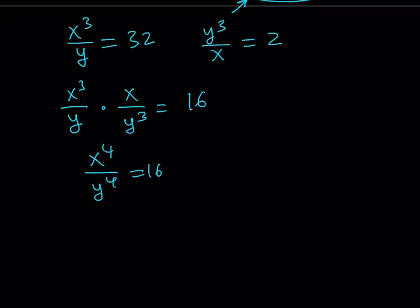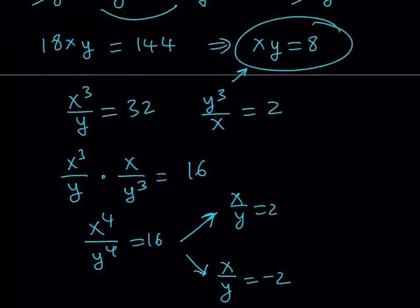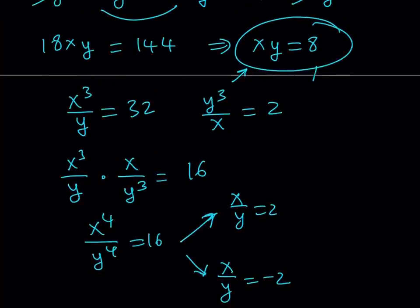Let's go ahead and write both of them. We can get x over y is equal to 2, or x over y is equal to negative 2. This gives us two different solutions, obviously, along with xy equals 8.